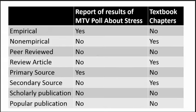As noted in this slide, the report of the results of the MTV poll is empirical. It's reporting original results, so it's a primary source. There's not any additional information that would be considered non-empirical or also make it a secondary source. In cases like this, we also assume that the peer-review process was not like that which is used for a scholarly publication, given that the intention was to gather information for a particular purpose.